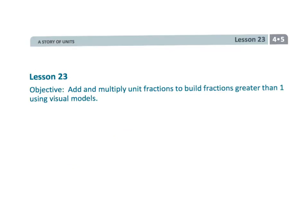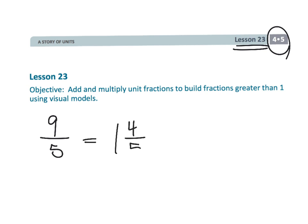That wraps up a kind of tricky one — fourth grade, module five, lesson 23. I think it's probably more tricky for us old fogies who learned the old way of turning what we used to call improper fractions — now just fractions greater than one — into a mixed number such as one and four-fifths.